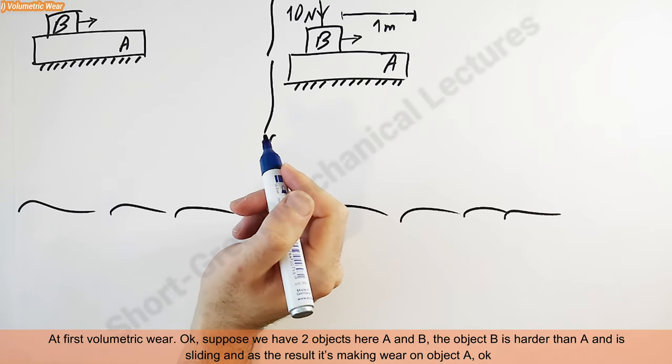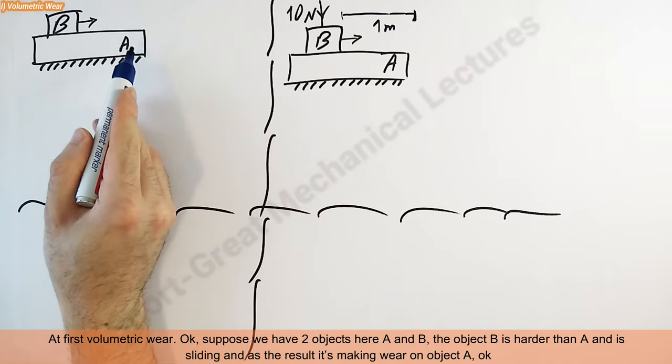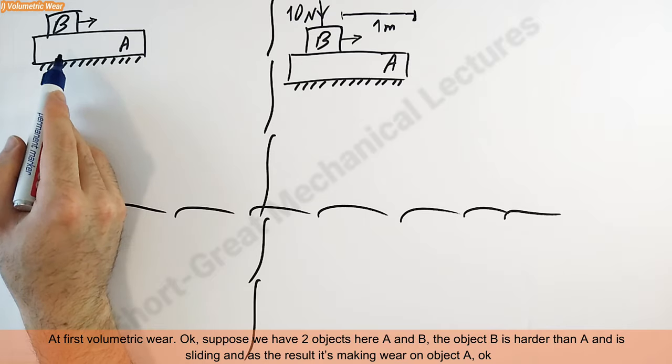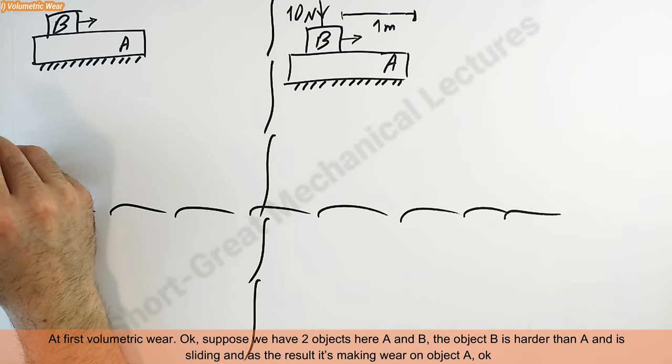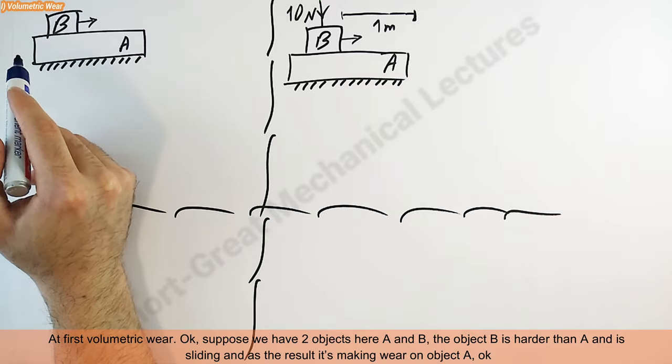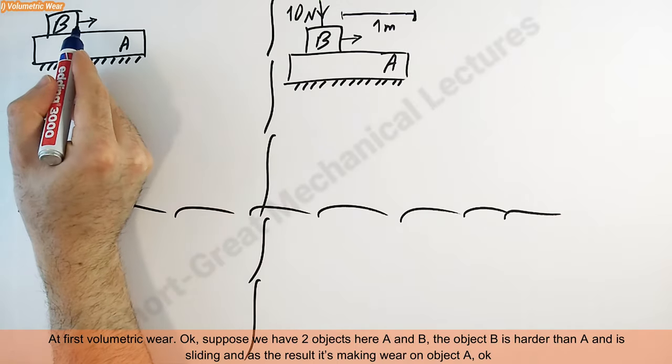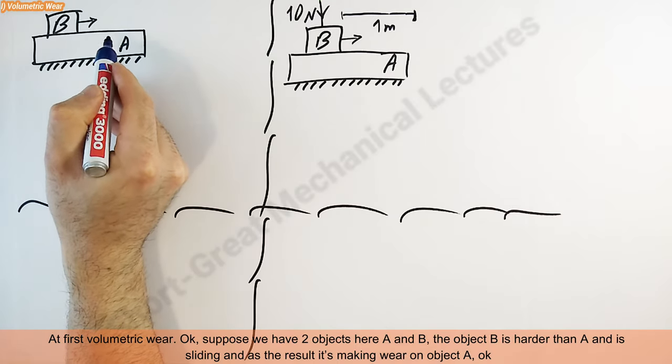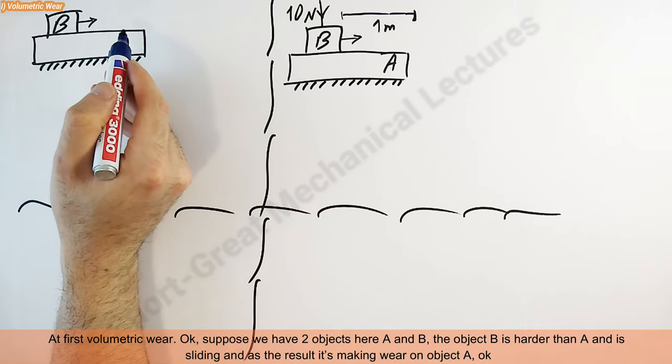At first, volumetric wear. Suppose we have two objects here, A and B. The object B is harder than A and is sliding, and as a result it's making wear on object A.